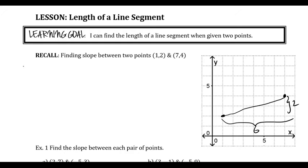We have a formula for how to solve this without counting — which works better because counting doesn't always work. The slope formula is the difference between the y values over the difference between the x values. You have to make sure you're consistent — going in the same direction — so y2 and x2 have to be the same point, and y1 and x1 have to be the same point.